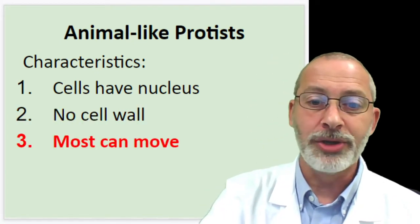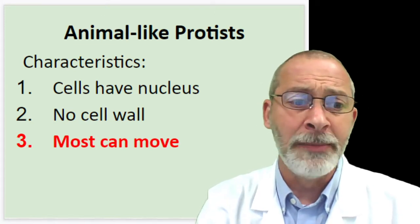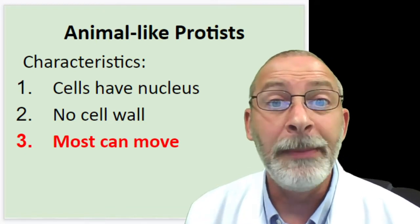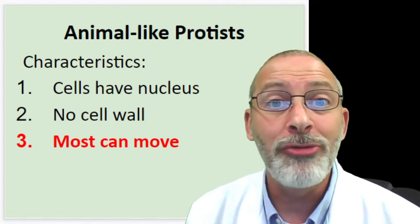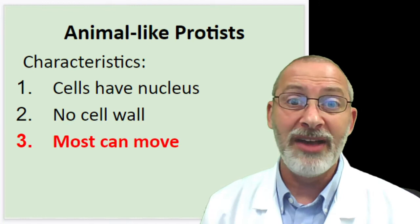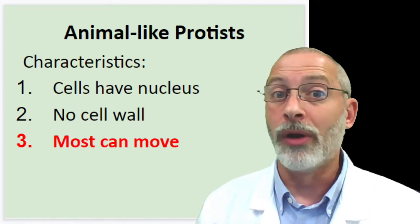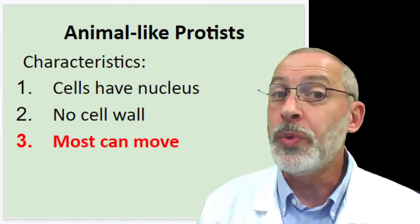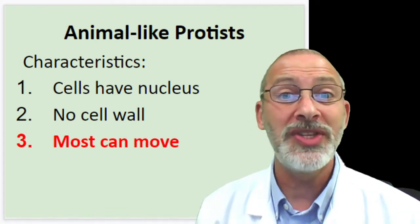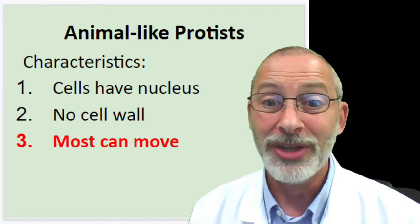Another characteristic is that like animals, most animal-like protists can move around. They don't have actual legs or arms, but we will be learning about the structures that animal-like protists do have for locomotion - because remember, they're only one cell big.